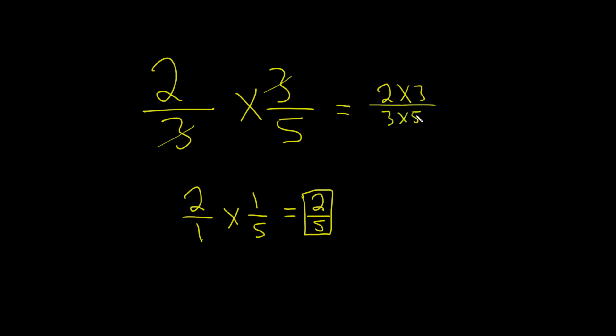And now you see the top 3 and the bottom 3 cancel, so you get 2 times 1 over 1 times 5. 2 times 1 is equal to 2, 1 times 5 is equal to 5. So two different ways of doing the same problem.